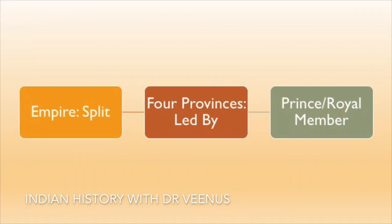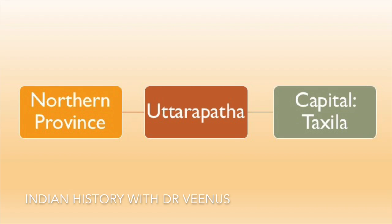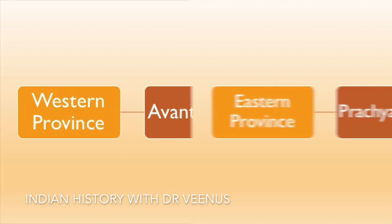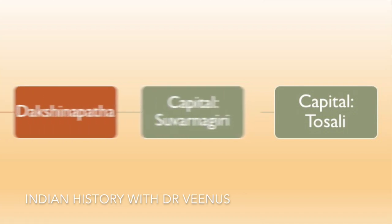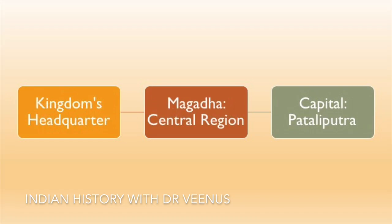Aside from the urban zone, the empire was split into four provinces, each led by a prince or a member of the royal family, known as Kumar or Aryaputra. The northern province, Uttarpath, had Takshila as its capital. The western province, Avantirat, had Ujjain as its capital. The eastern province, Pratshapat, had Toshali as its center. And the southern province, Dakshinapat, had Suvarnagiri as its capital — these were Ashoka's four provinces.